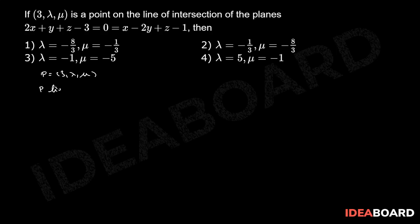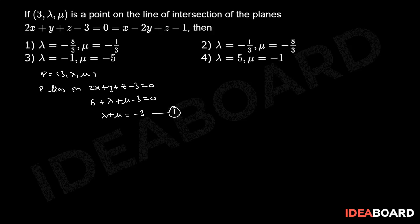Therefore, P lies on 2x + y + z - 3 = 0, which implies 6 + lambda + mu - 3 = 0, which implies lambda + mu = -3. Consider this as equation number 1.